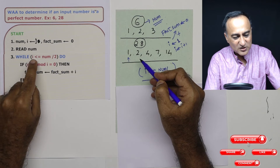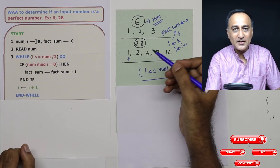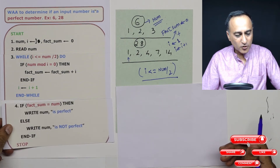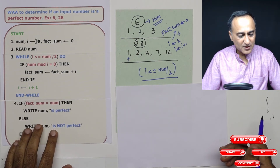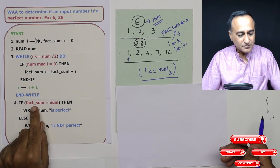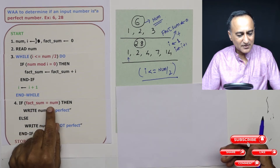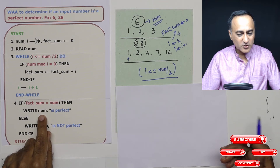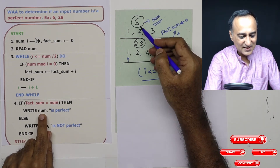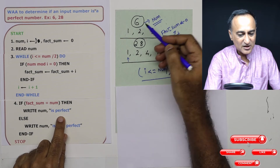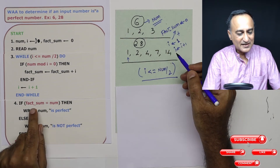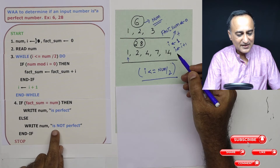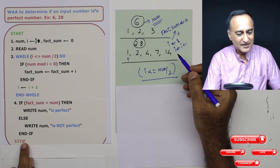At some point I will be greater than number divided by 2 and we come out of the while loop. Then we do a simple check: if the value of fact_sum is equal to the original number, then we output that the number is perfect — for example, 'six is perfect.' If the condition is false, we output that the number is not perfect, then stop.